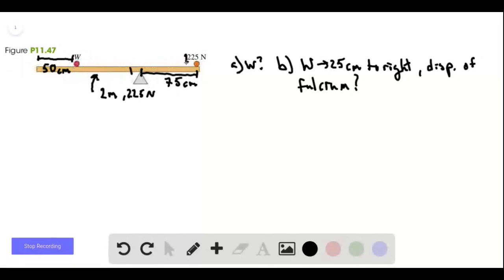Let's call this one, this two, and this three. So first we want to find the value of the weight, and then if we move it 25 centimeters to the right, how much and in what direction do we need to move the fulcrum?